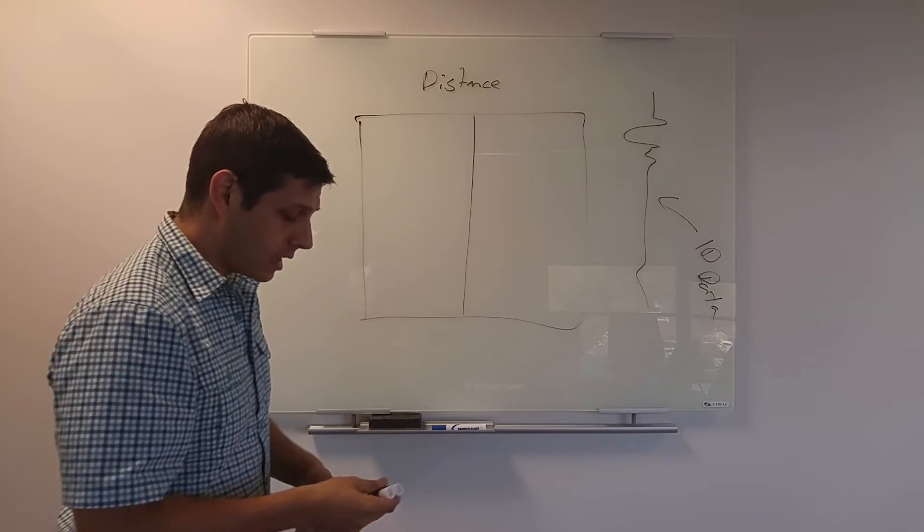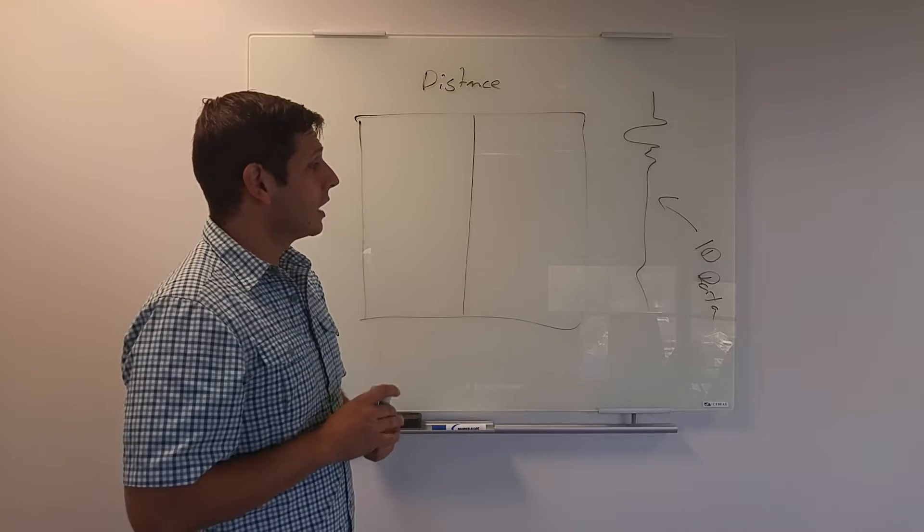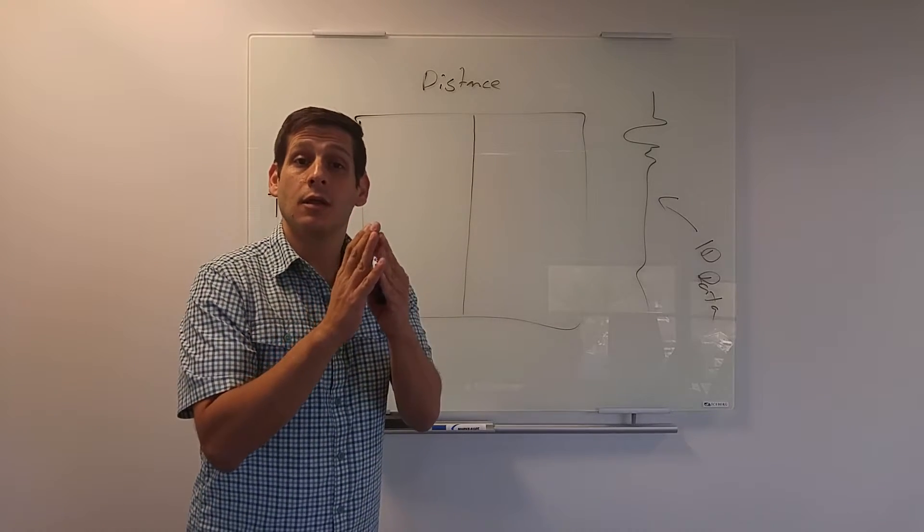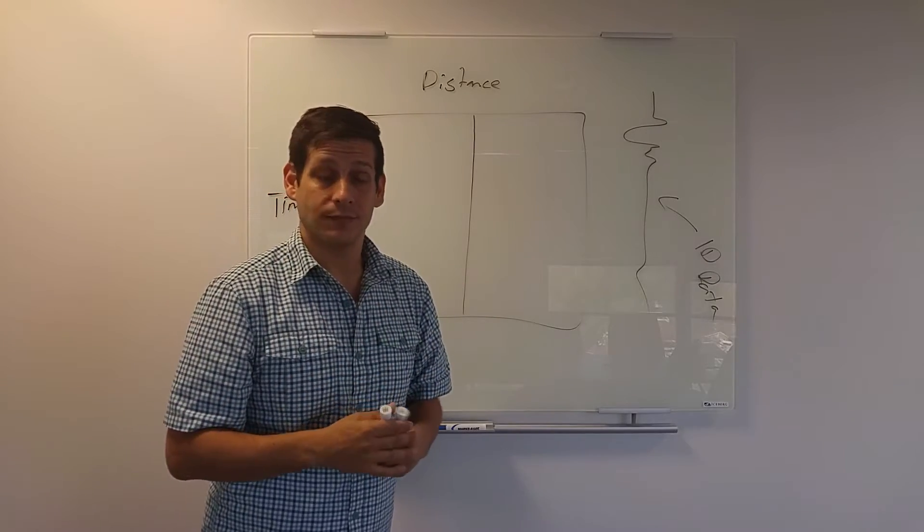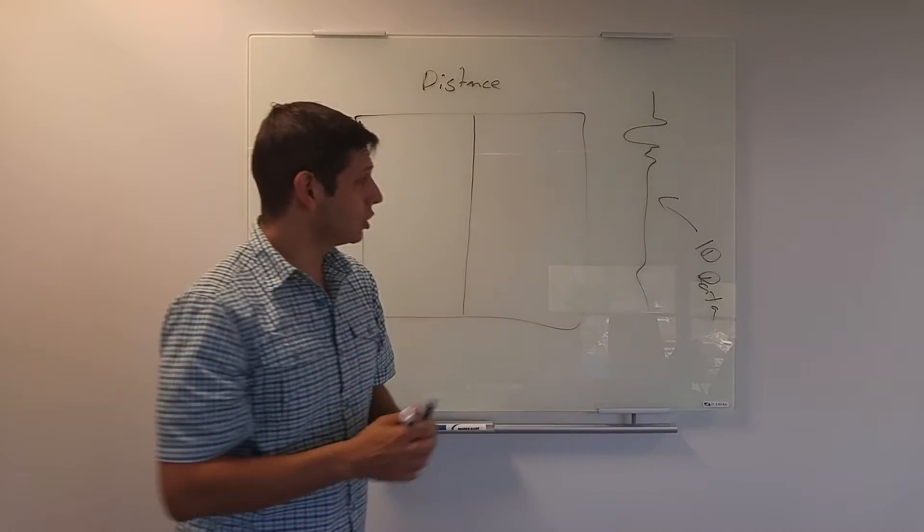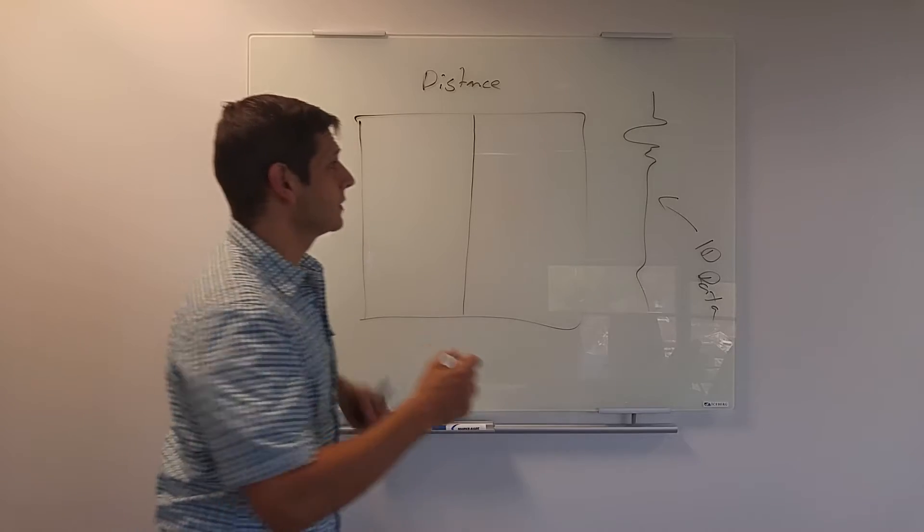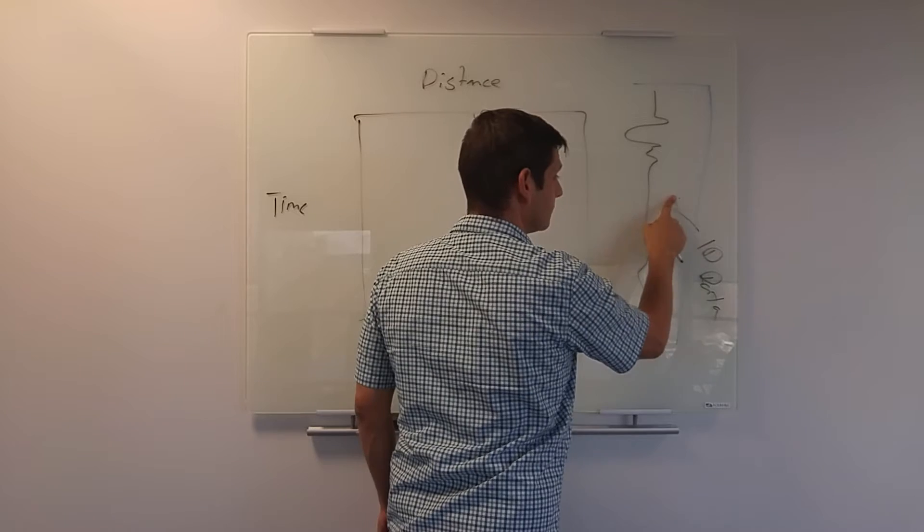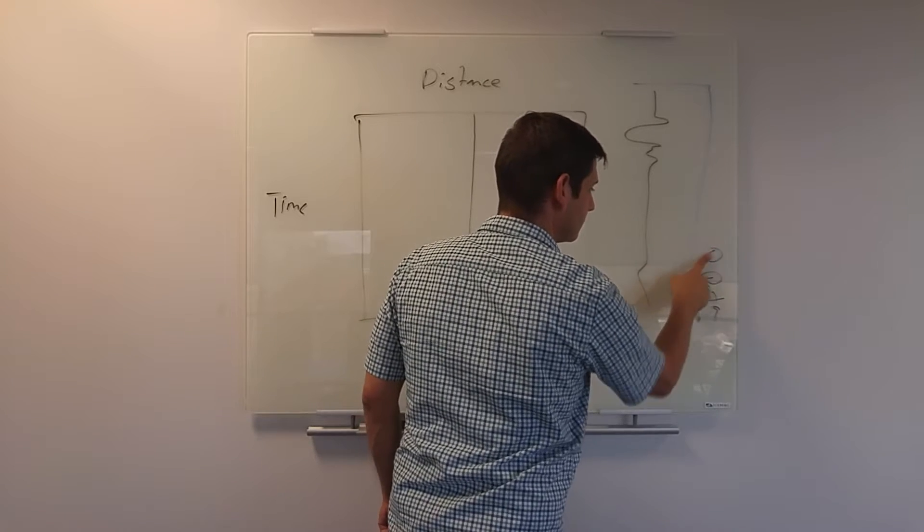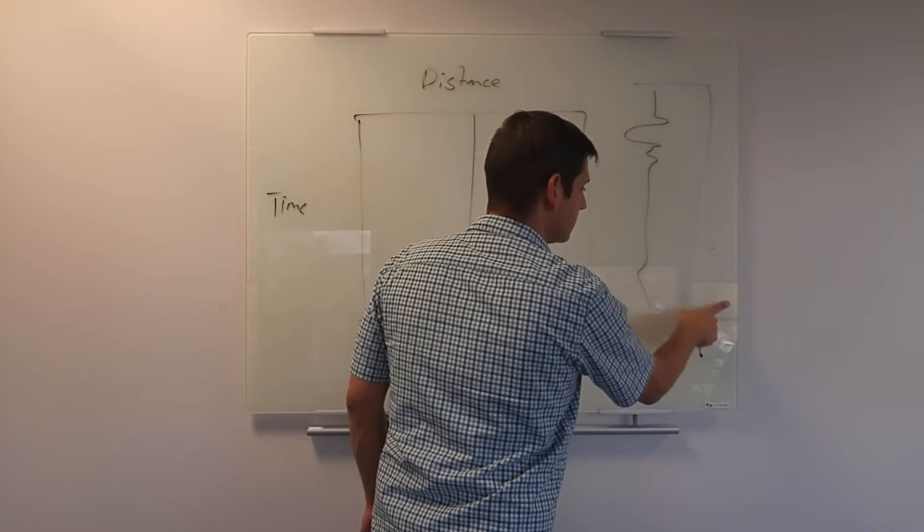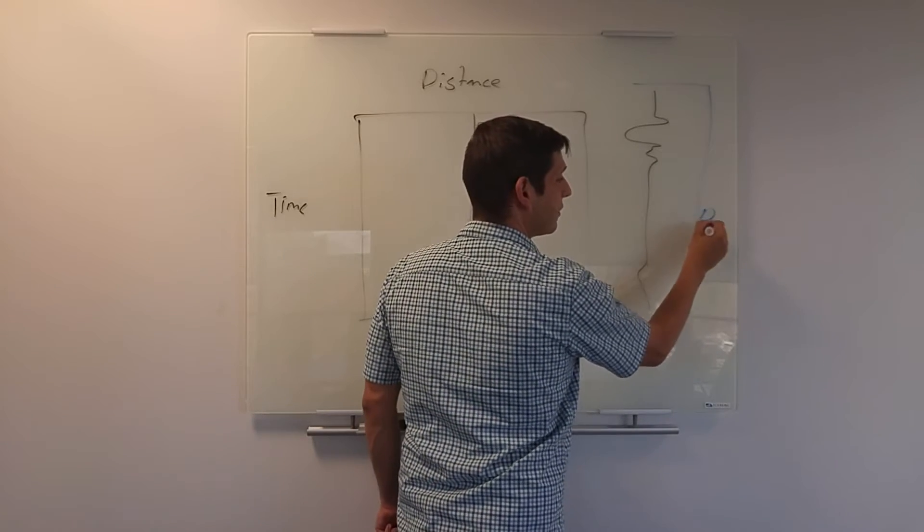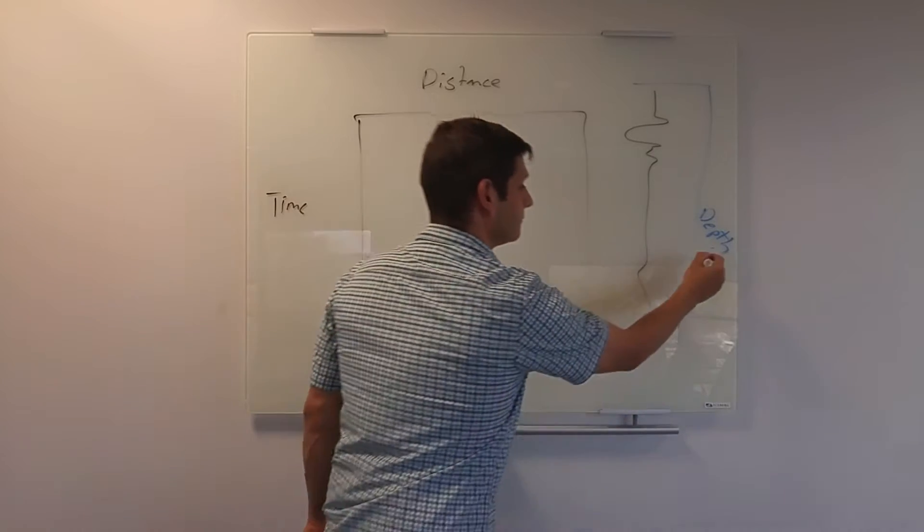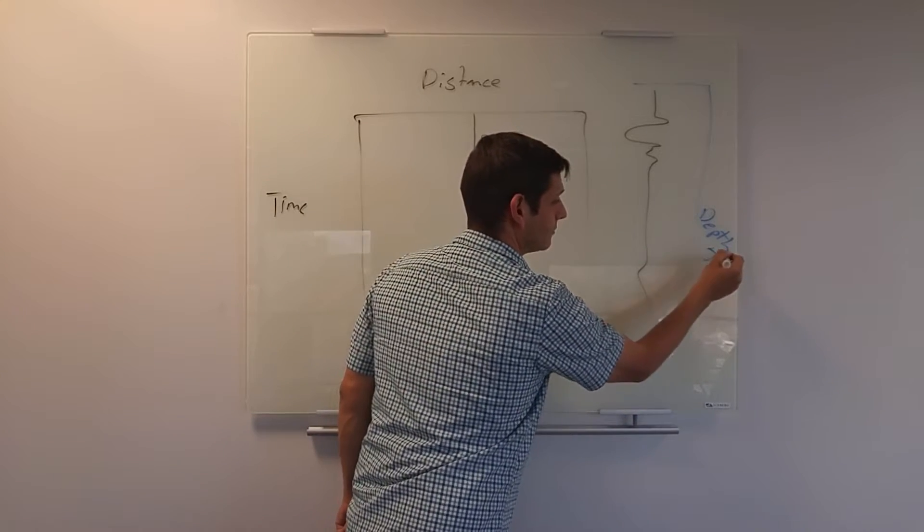I'm going to tell you two ways that you can use this one-dimensional data to help you in your interpretations. The first benefit is it gives you amplitude. When you look at your one-dimensional data set over here, you have two scales.